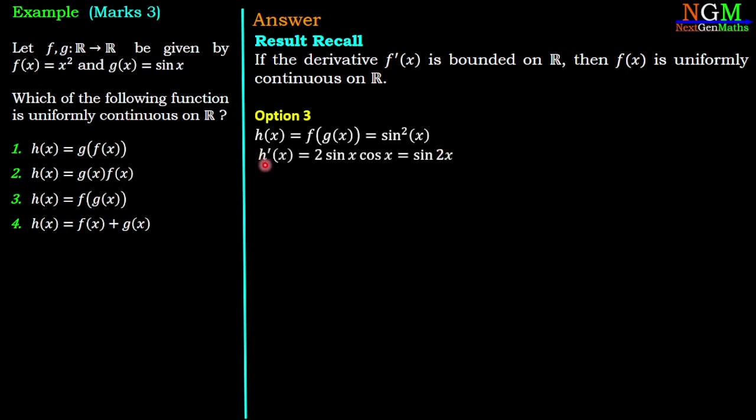Take the derivative of h(x) which is h'(x) = 2 sin x cos x = sin 2x. So |h'(x)| = |sin 2x| and sin 2x is less than or equal to 1 that we know and hence it is a bounded function.